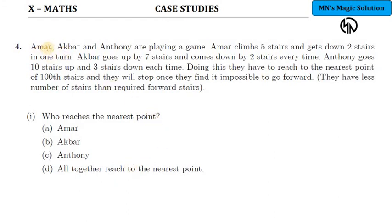In this case study four, Amar, Akbar, and Anthony - these three persons are playing a game in which they are climbing stairs. Amar is climbing five stairs and gets down two stairs. So in one turn, he is able to climb three steps.